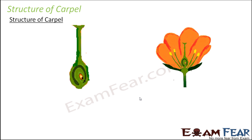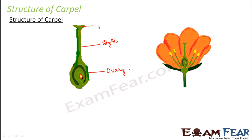A carpel basically consists of three most important parts: the ovary, the style, and the stigma. The swollen portion at the base is the ovary, the tube-like structure is the style, and the topmost portion is the stigma. Now let us look inside the ovary.